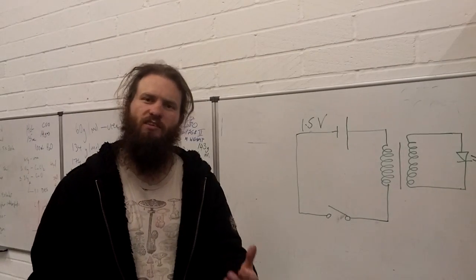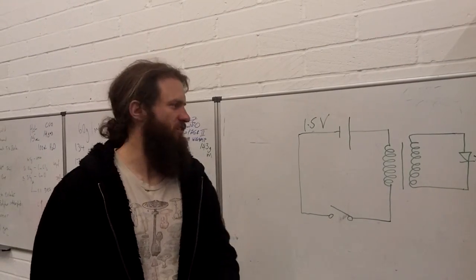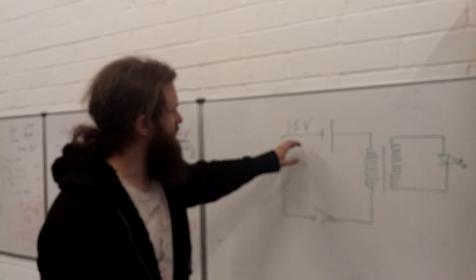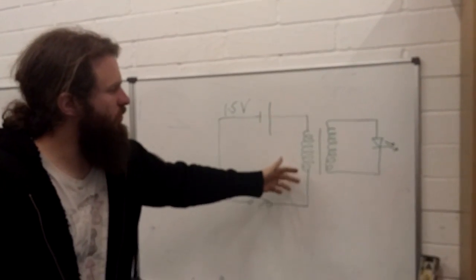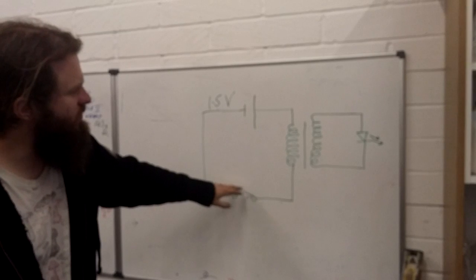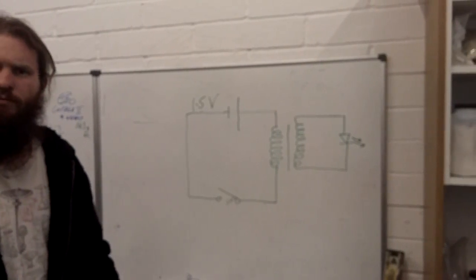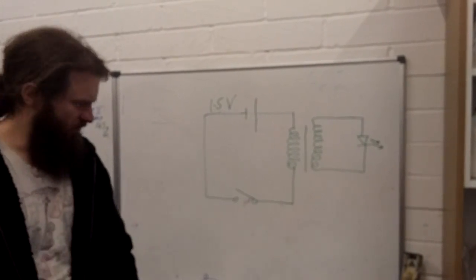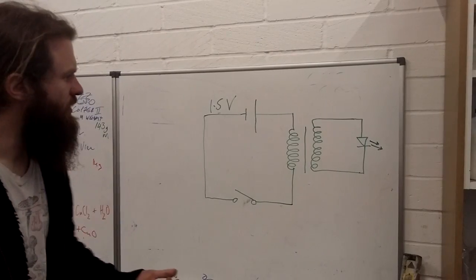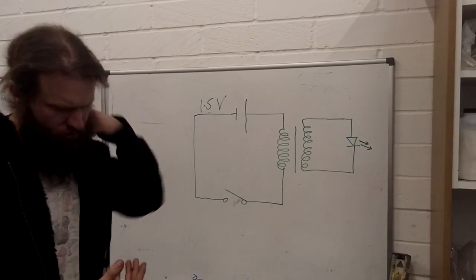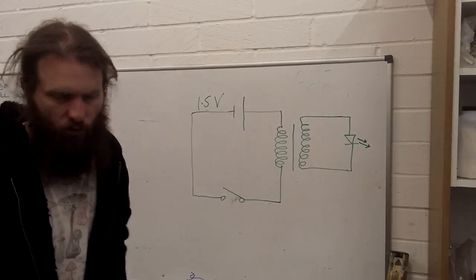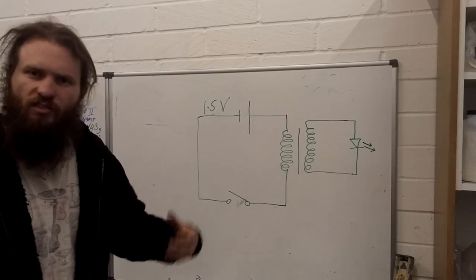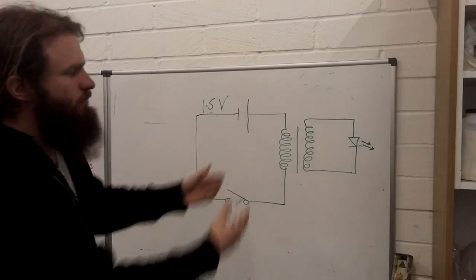The next concept you need to understand the joule thief is the transformative effect, or transformer. In this circuit, you have battery 1.5 volts going through a coil, which we can switch on and off as before. And as we saw before, the back EMF from the collapsing magnetic field can be used to drive an LED. Now, the transformer works by wrapping another coil around the same nail. And then the magnetic field induced in the nail is shared between both coils.